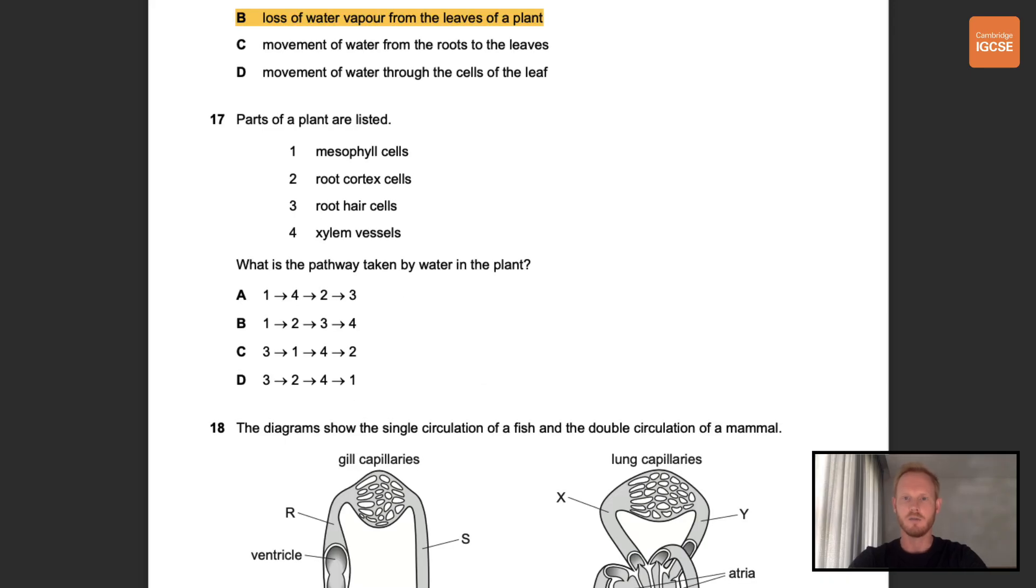Question 17. Parts of a plant are listed: mesophyll cells, root cortex cells, root hair cells, and xylem vessels. What is the pathway taken by water in the plant? The pathway of water through the root, stem, and leaf of a plant is root hair cells, root cortex cells, xylem vessels, and mesophyll cells. So the correct answer is D: 3, 2, 4, 1.